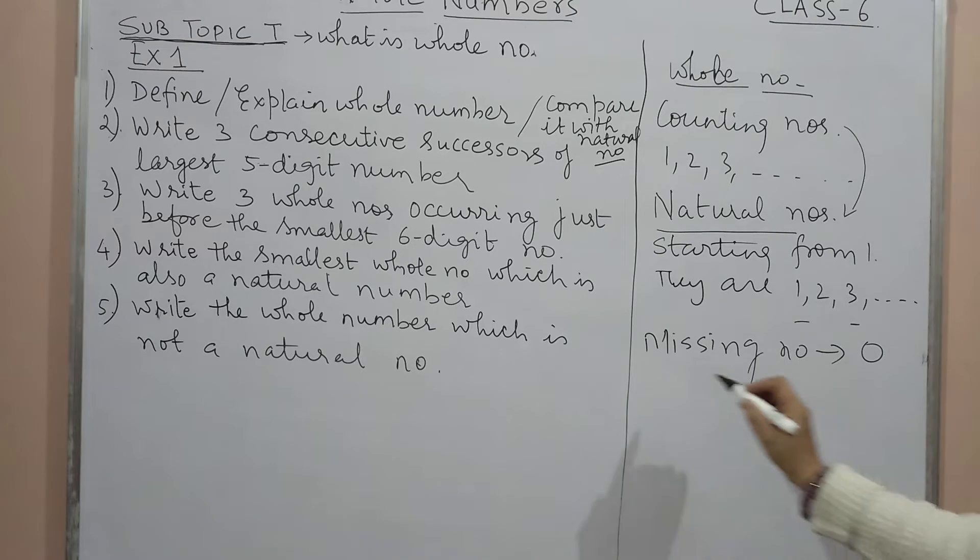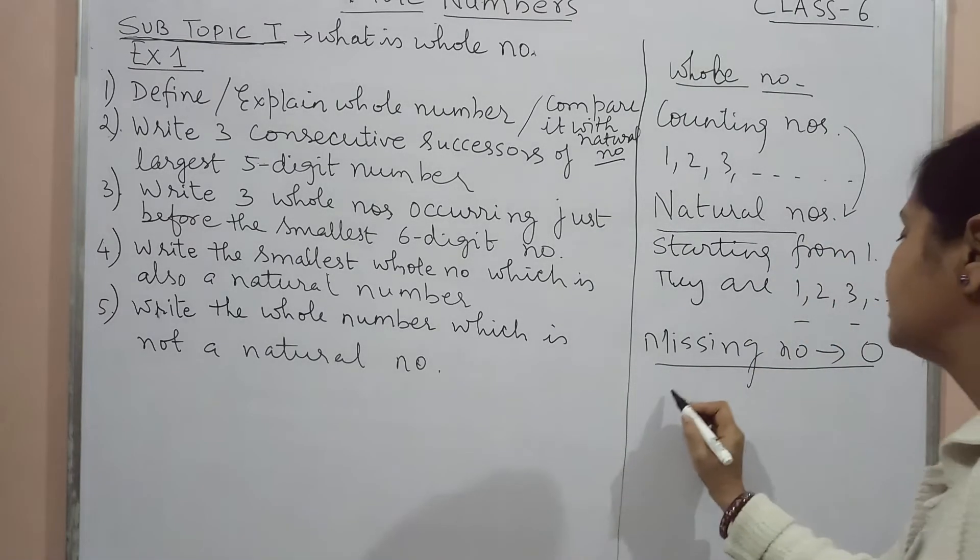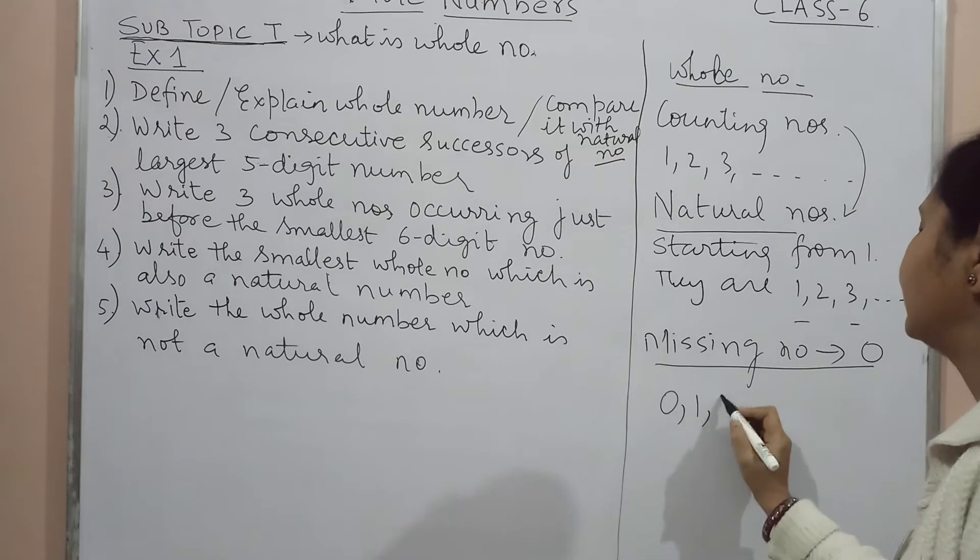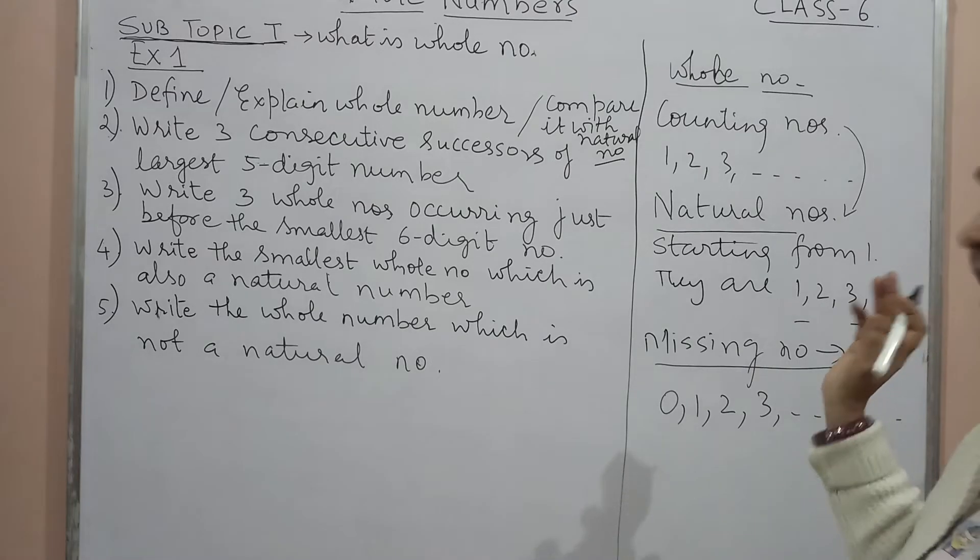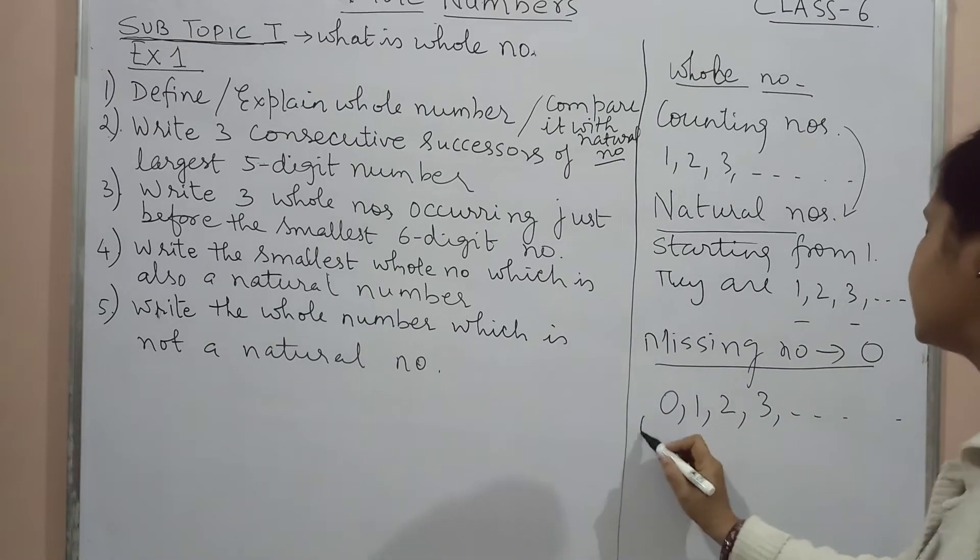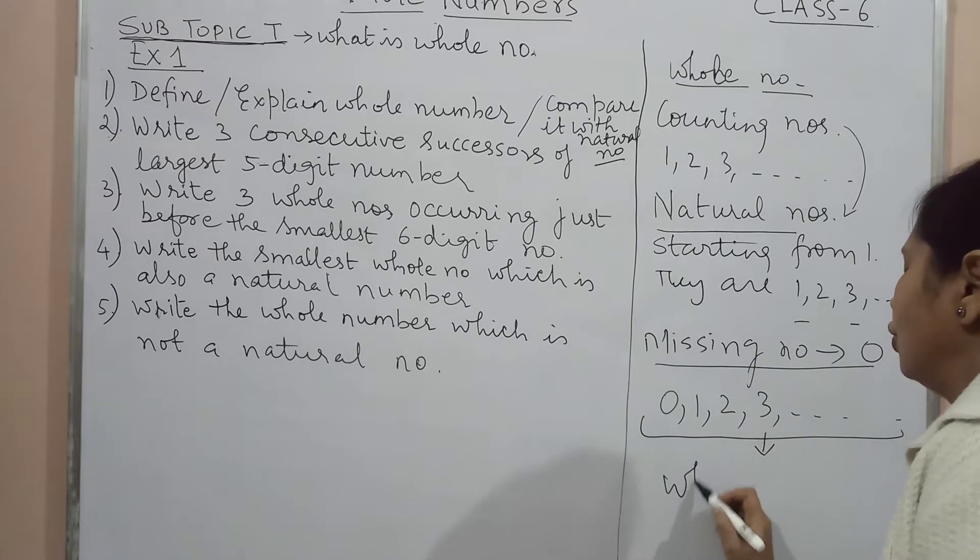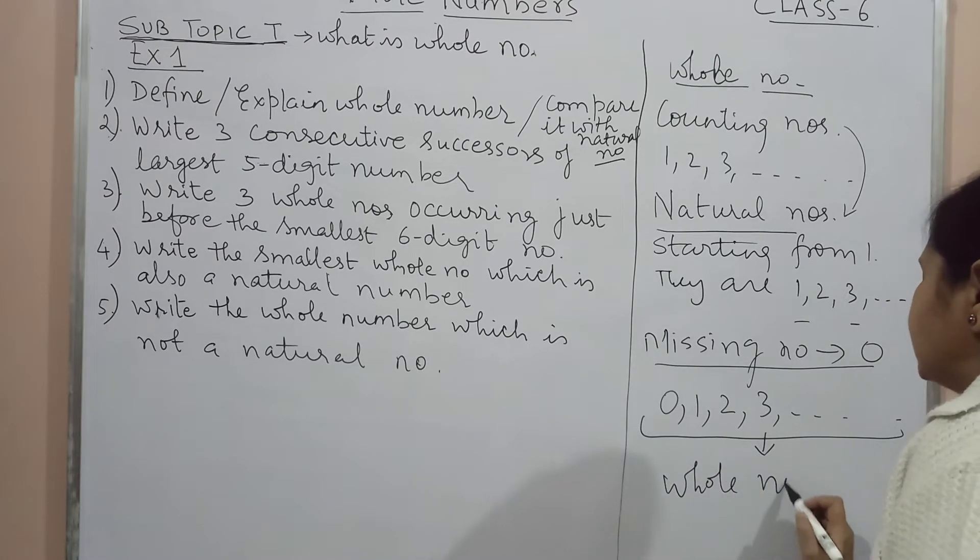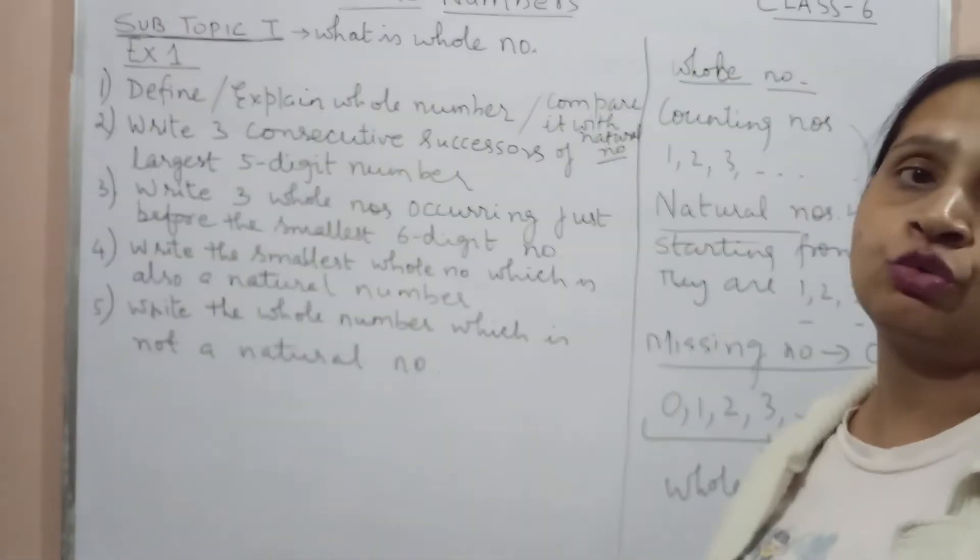Alright, toh humne kya kiya? Counting numbers mein zero ko add kar diya. One, two, three, and so on, jiski koi ending nahi hai, and this set of numbers we call those numbers to be whole numbers. Jaise ki English mein aap padhte ho, whole ka matlab kya hai? Ab complete ho gya.